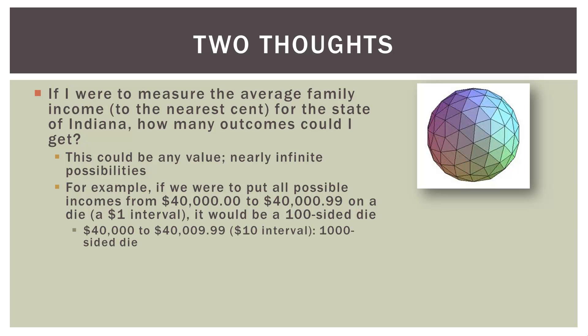Now, what if we made it $40,000 even to $40,000, $9.99? That's just a $10 interval. Well, in that case, our die would have to have 1,000 sides. Because there are so many cent intervals in there, we'd have to have 1,000 sides to put all those different incomes on.